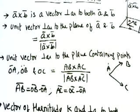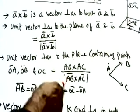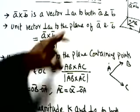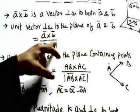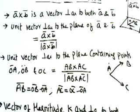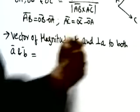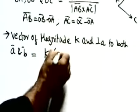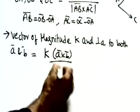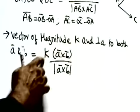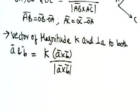Uses of dot product: to find the angle between two vectors a and b, use cosθ = (a·b) / (|a||b|). If we need a vector of magnitude ten perpendicular to a and b, we multiply ten by the unit vector. So magnitude k gives k · (a×b)/|a×b|.